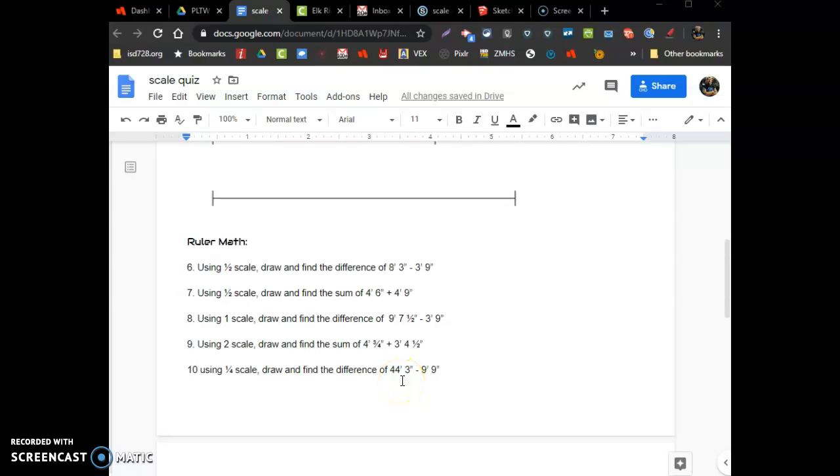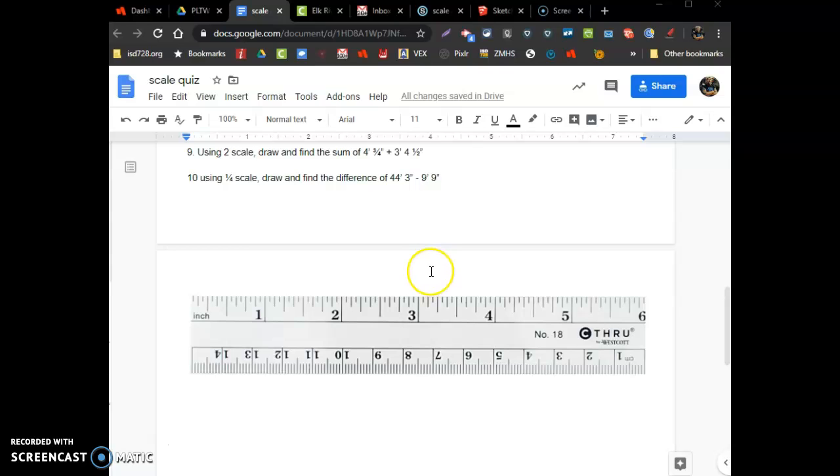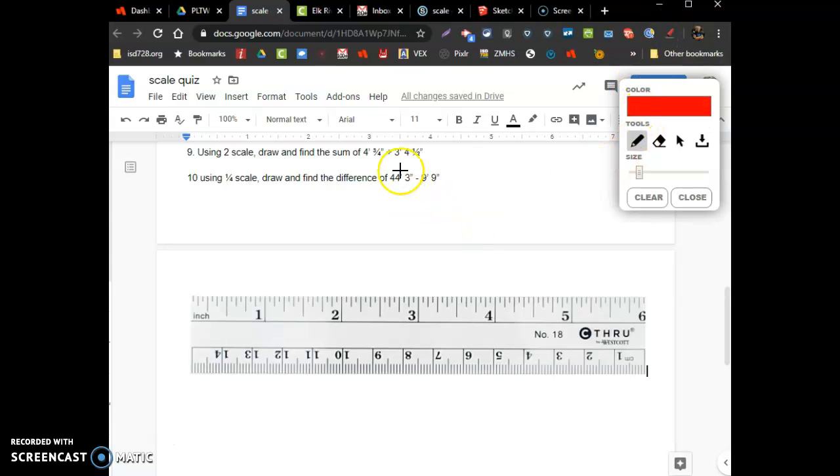Six through ten will also be there, but a little more of a fill in the blank kind of question. Here it says use half scale, draw and find the difference of eight foot three minus three foot nine. How do we do that? Well, I'm going to use the ruler. I don't quite have the full ruler here to work with, but we can do part of it. I'll go a little bit smaller so you have room. I'm still using the same half scale, right?